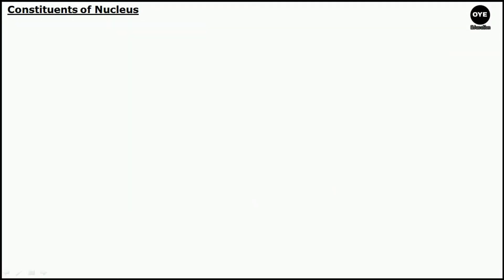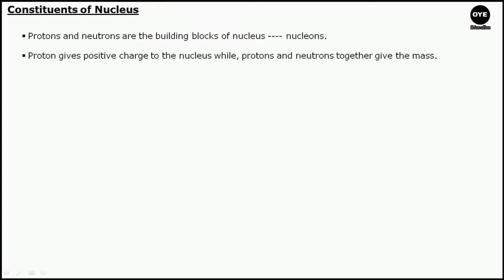Let us now move to constituents of the nucleus. We already discussed that the nucleus contains protons and neutrons, and as a whole we know them as nucleons. Among the nucleons, the proton is positively charged while the neutron is electrically neutral.